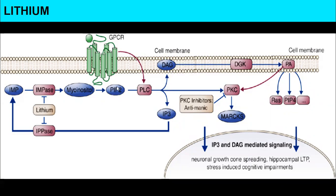PIP2 acts like a second messenger, initiating a cascade of events. What we need to do is inhibit this cycle — we want PIP2 to not produce any more DAG and IP3. In order to do so, we administer lithium.